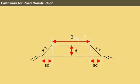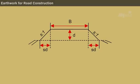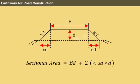The sectional area is calculated by adding the area of the central rectangular portion and the area of the two side triangular portions of the trapezium. This can be expressed as cross-sectional area is equal to b into d plus 2 into half sd into d that is equal to b into d plus sd square.